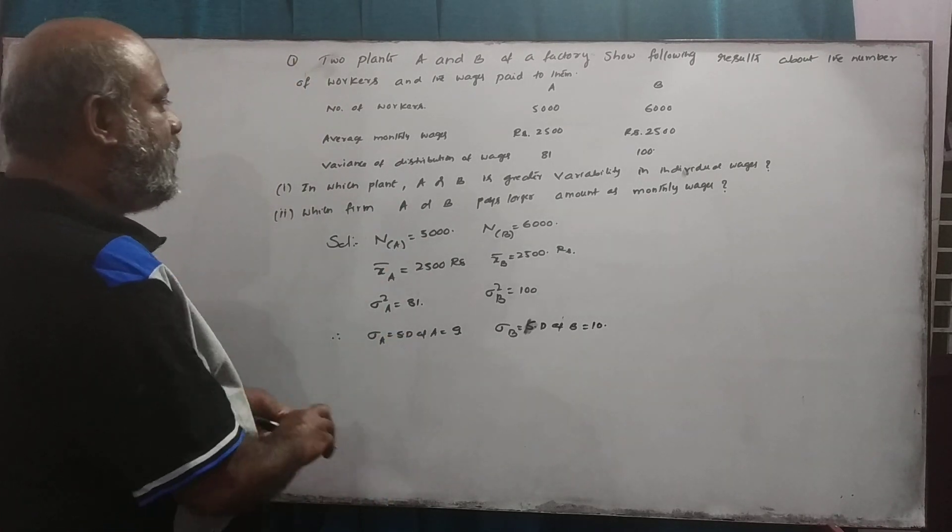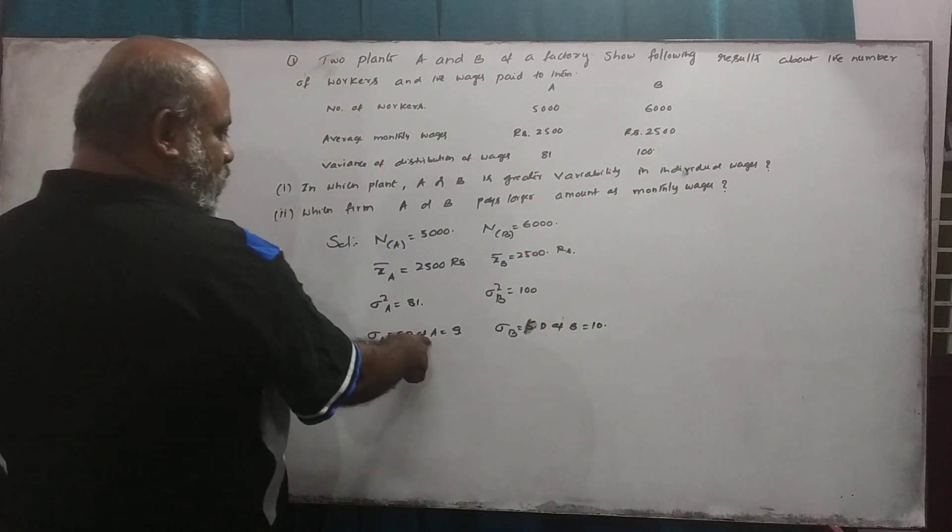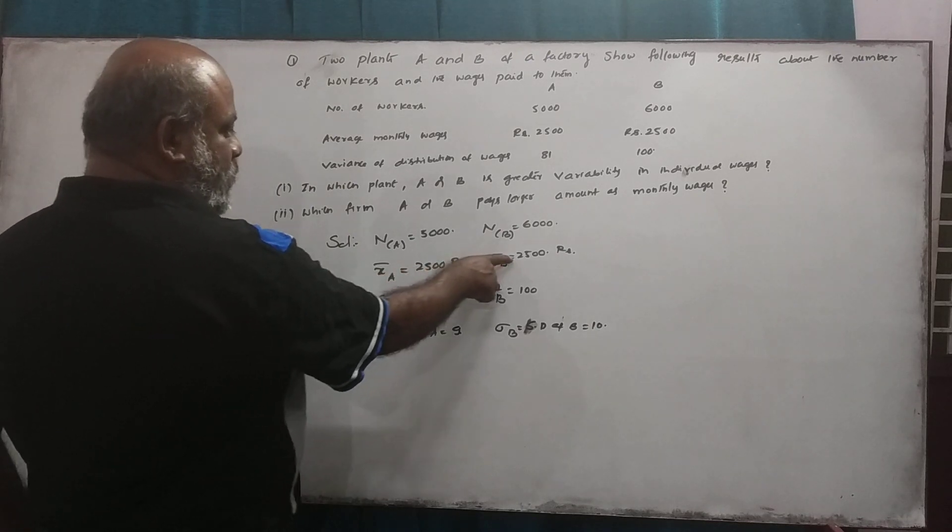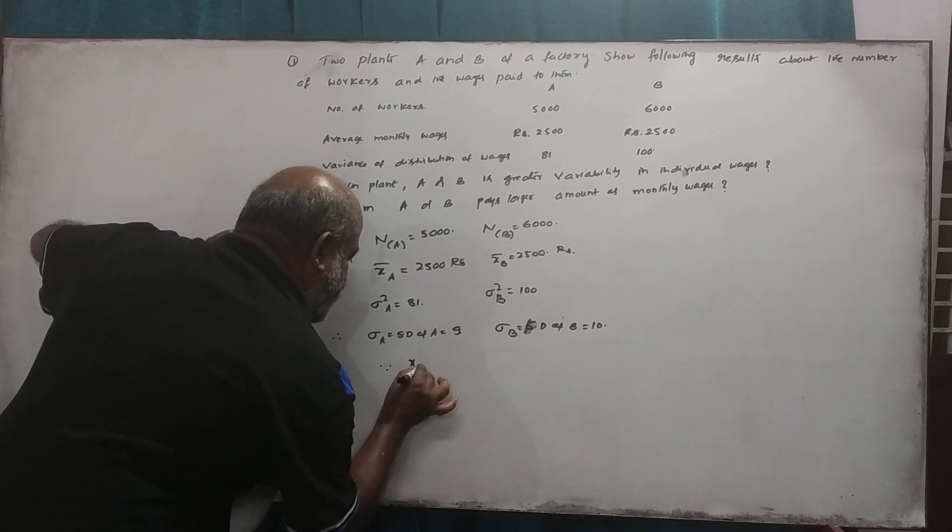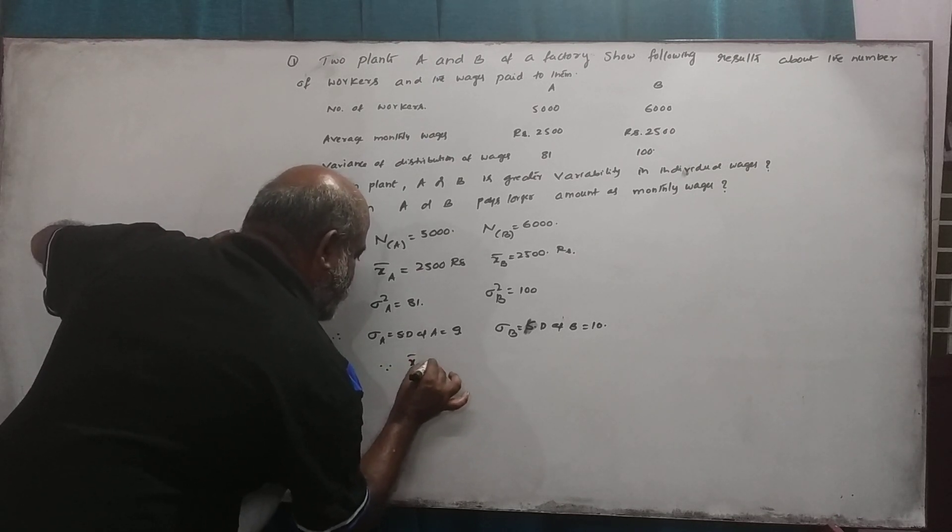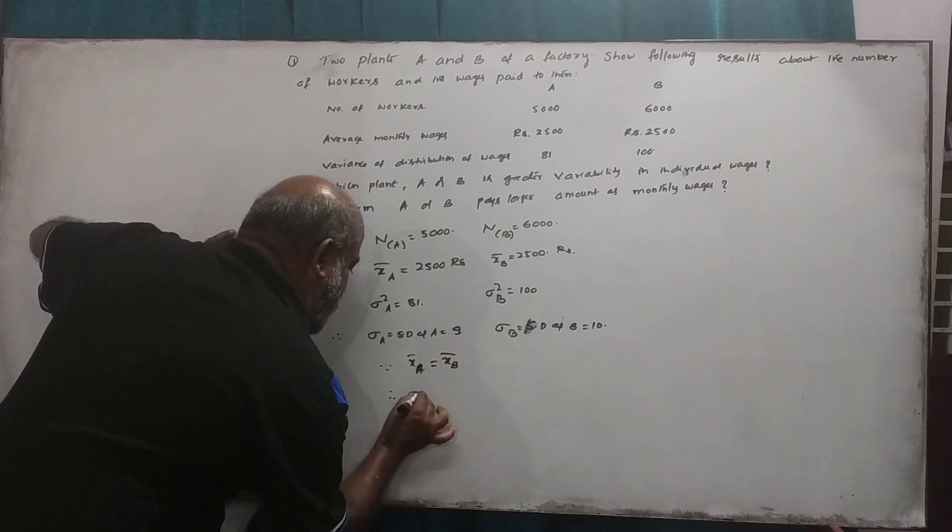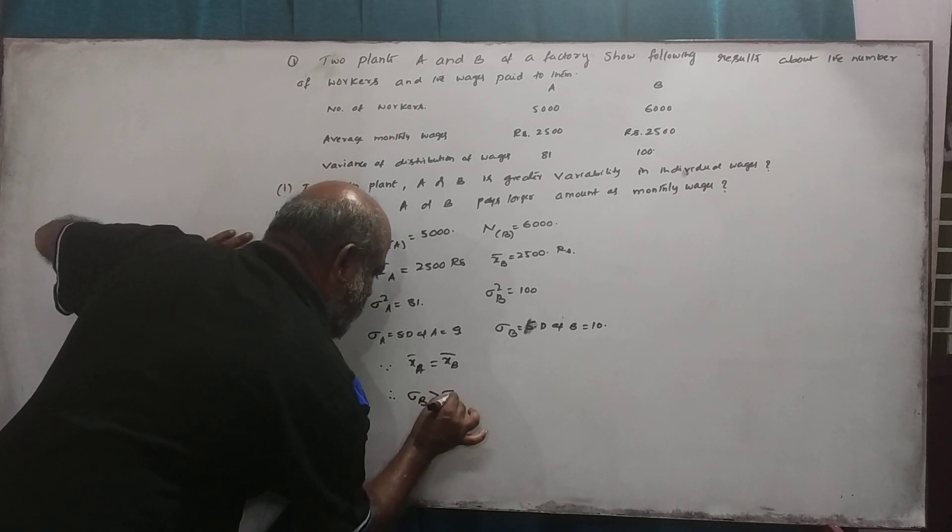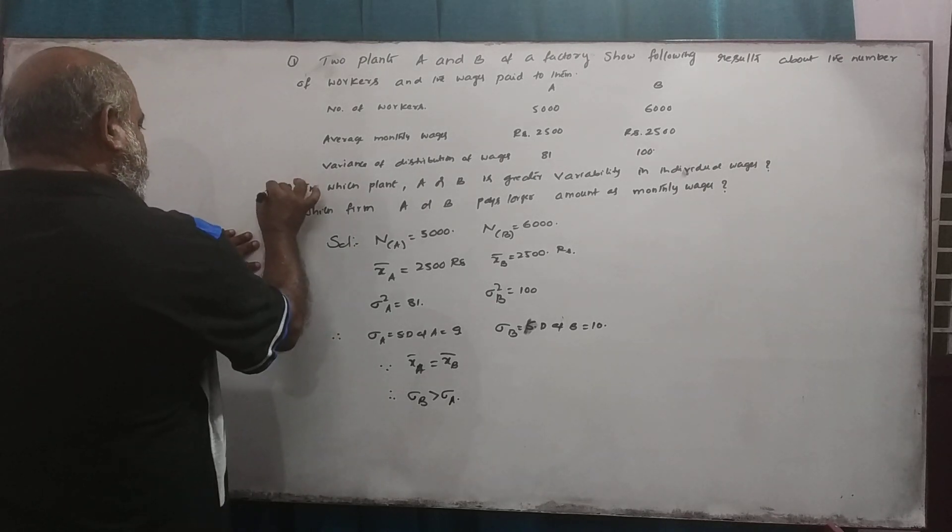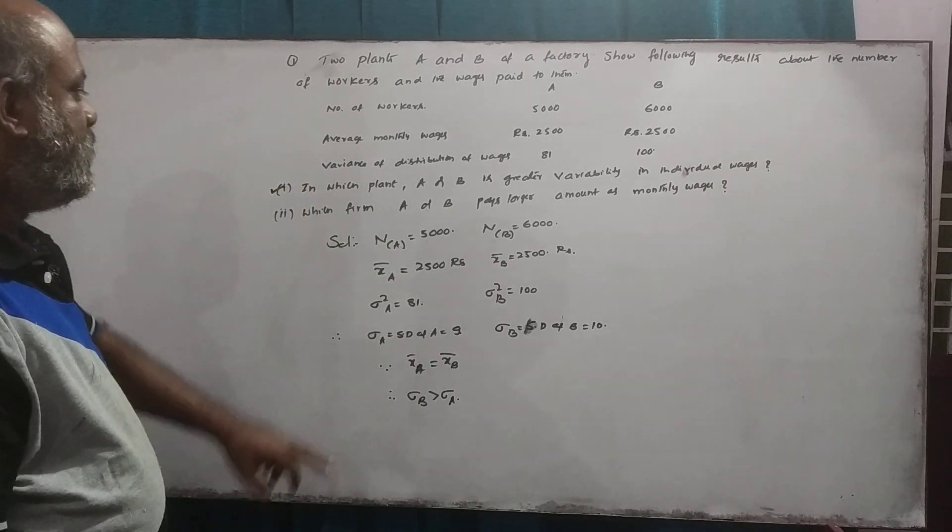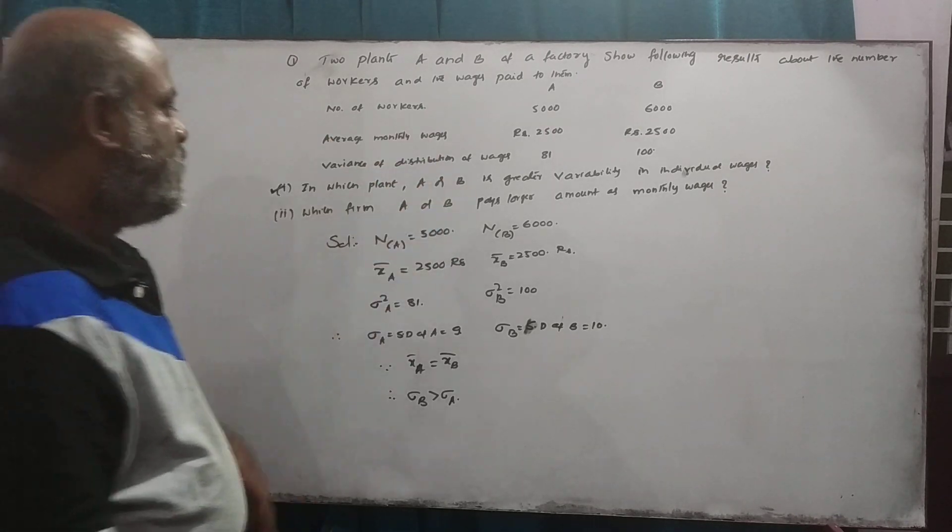This standard has greater variability. Since X A bar should be equal to X B bar, therefore sigma B is greater than sigma A. So the standard deviation of B is greater than A.